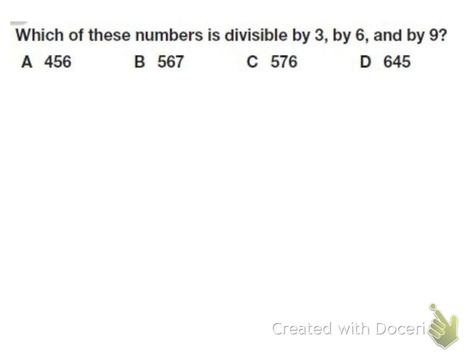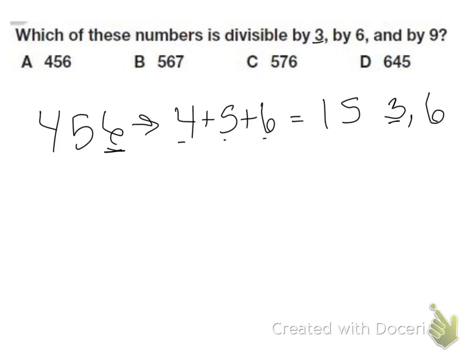This says which of these numbers is divisible by 3, by 6, and by 9. Let's see which of these numbers is divisible by 3 and 6 and 9. We start with 456, and remember we do 4 plus 5 plus 6. So 4 plus 5 is 9, plus 6 is 15. I know that 15 can be divided by 3, so this one is divisible by 3. It's also an even number, so I know it's divisible by 2. Since it's divisible by 3 and 2, this number is also divisible by 6. But 15, you cannot divide 15 by 9, so that means it's not divisible by 9. So it can't be A.